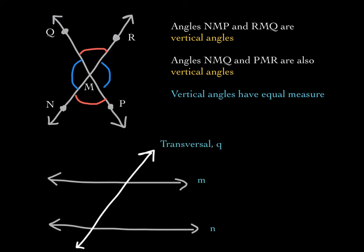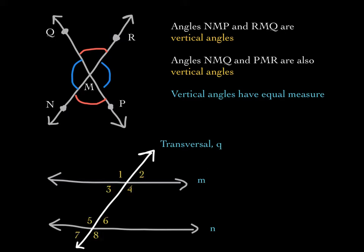Now, if we have a pair of parallel lines — meaning they never intersect each other — and we have a third line that cuts through or intersects the pair of parallel lines, this line is called the transversal. I'm naming the transversal Q and the parallel lines M and N. When a transversal intersects a pair of parallel lines, it forms eight angles. Angles one through eight have some special properties that I'm about to go through.